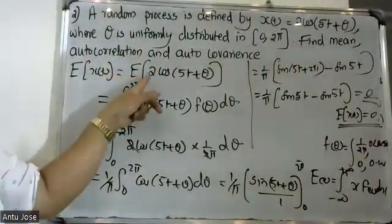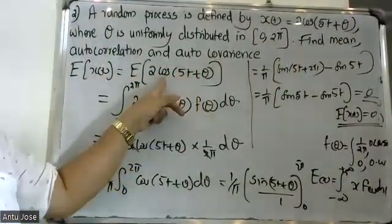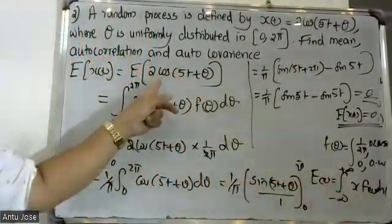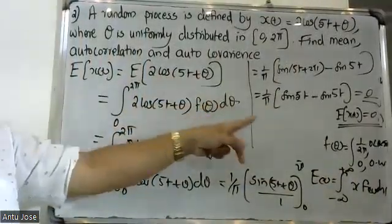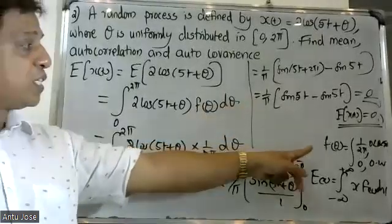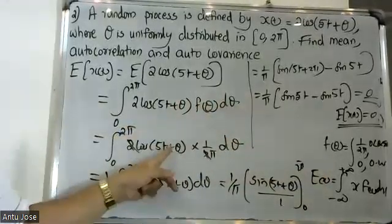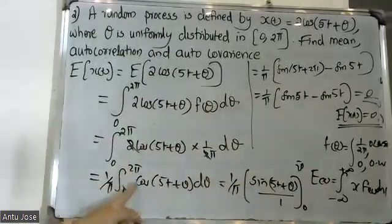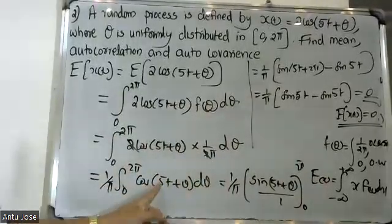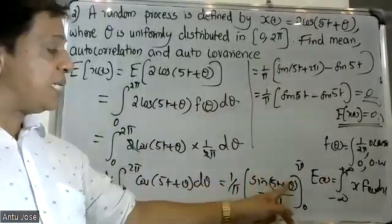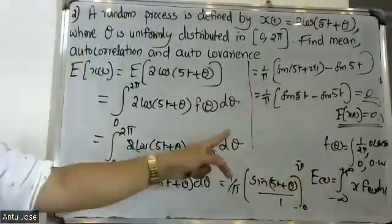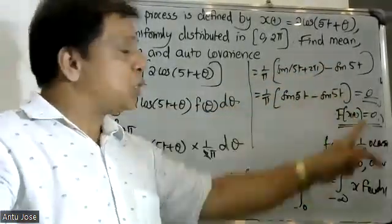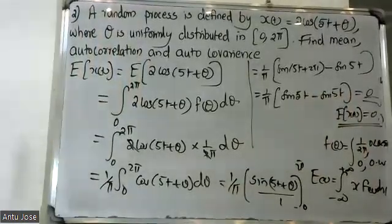So the expectation of x(t) = E[2cos(5t + θ)] = integral from minus infinity to plus infinity of 2cos(5t + θ) × f(θ) dθ. With f(θ) = 1/(2π), this becomes (1/(2π)) × integral of 2cos(5t + θ) dθ from 0 to 2π. The answer is: E[x(t)] = 0.